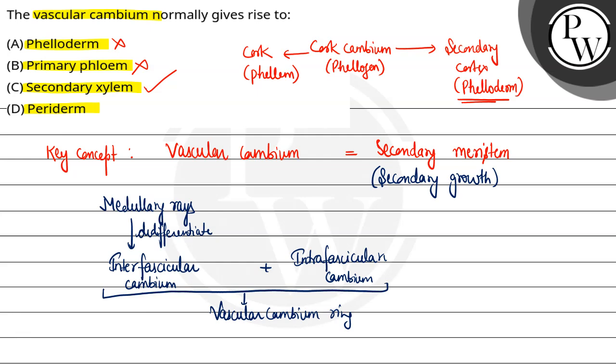The last option is periderm. To ye jo cork cambium se 3 layers bani hai ultimately in sabhi layers ko collectively kehte hain periderm jo ki bark ka part hai. Isliye ye option bhi hamara incorrect ho jayega. So the final answer is option C is secondary xylem. Hope you understood it well, best of luck.